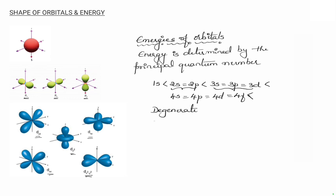For the hydrogen atom, 1s has the lowest energy — it is the most stable condition and is therefore called the ground state energy level. The other orbitals such as 2s, 2p, etc. are termed excited states.